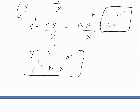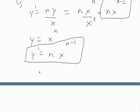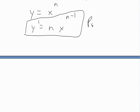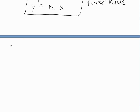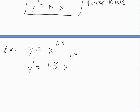That's all it is — that's the general power rule. If y equals x to the n, then y prime equals n times x to the n minus 1. For example, if y equals x to the 1.3, then y prime equals 1.3 times x to the 0.3. That's the derivative.